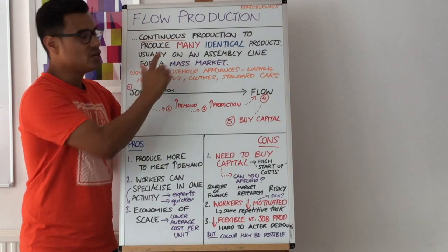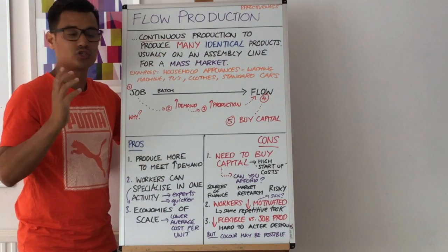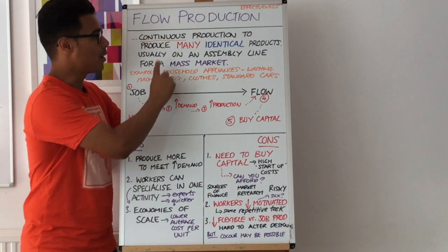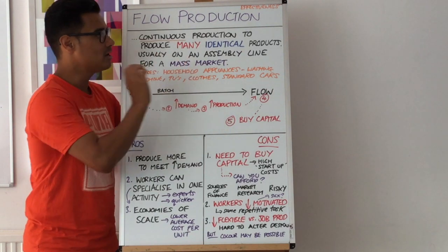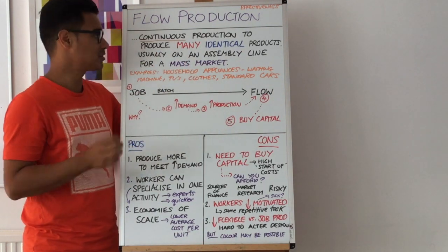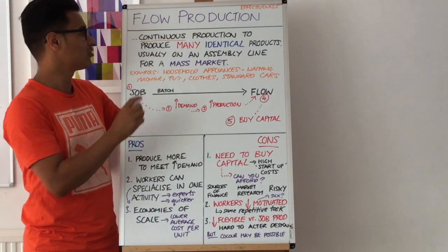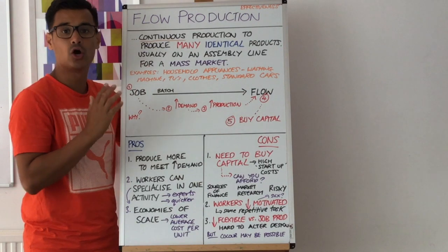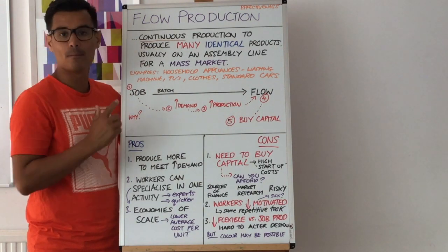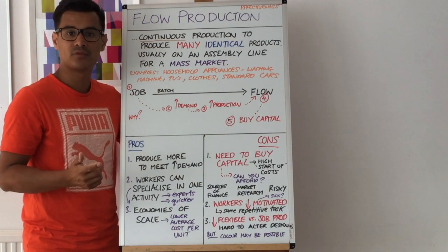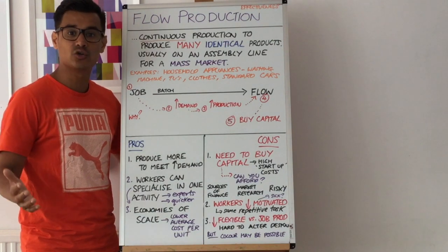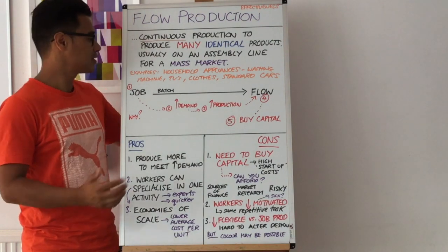Flow production is about continuous, non-stop production to produce many identical products — usually, not always, on an assembly line for the mass market. It's about that massive production of identical items.